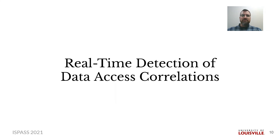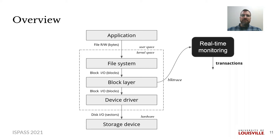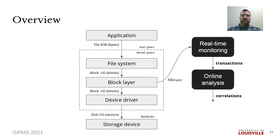Next is our proposed framework. Here is a simple schematic of the storage I/O stack for Linux, which is similar to other operating systems. What our framework needs from the operating system is to listen to events at the block layer. In Linux, which we used for our evaluation, this is achieved with a tool called BlockTrace. Our monitoring module listens for requested extents and groups them into transactions. An online analysis module processes transactions into frequent extent correlations. These correlations then inform any storage optimization scheme designed to enhance performance.